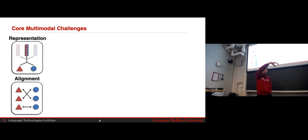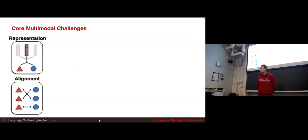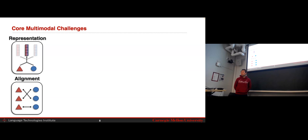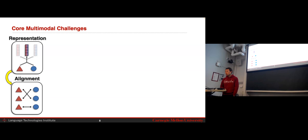We then moved on to alignment — the case where there were multiple elements across your modalities. For example, three words in your sentence and four object regions in your image. If you have multiple elements across modalities, how can we learn better alignment between them? How do you know which word corresponds to which image region? We saw lots of examples of multimodal transformers and their extension to better capture alignment.